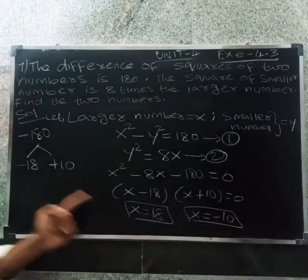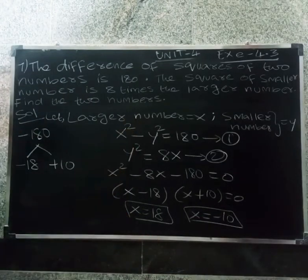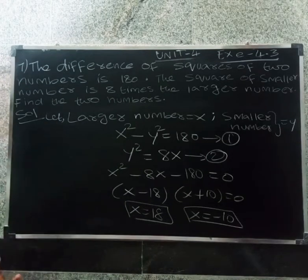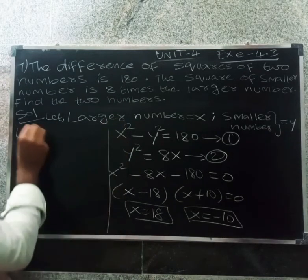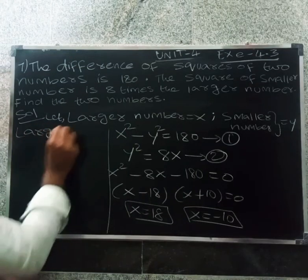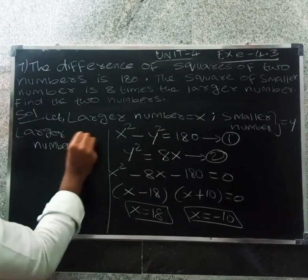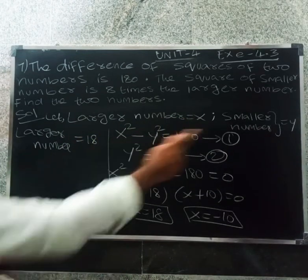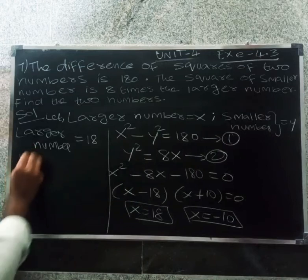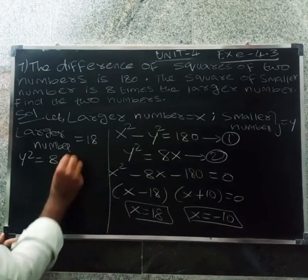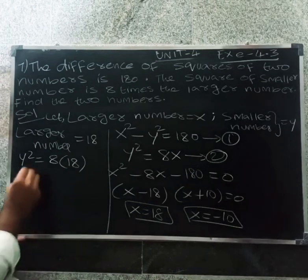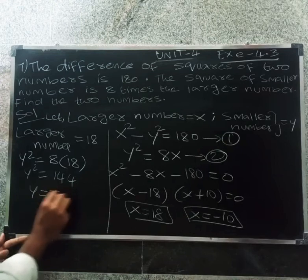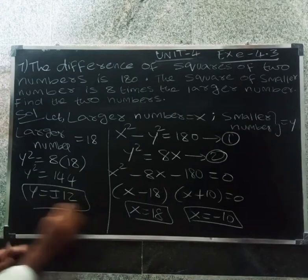Since x is the larger number, x equals 18. So the larger number is 18. For the smaller number y: y squared equals 8 times 18 equals 144. So y equals 12.